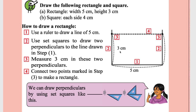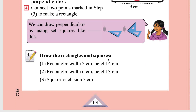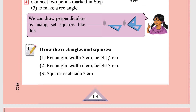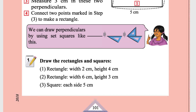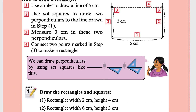Measure 3 cm on these two perpendicular lines, mark two points, and join them to complete the rectangle. Now you need to draw: a rectangle of width 2 cm and height 4 cm, a rectangle of width 6 cm and height 3 cm, and a square with each side 5 cm. The procedure is the same. We'll meet in the next class with the next topic.